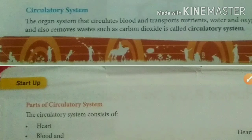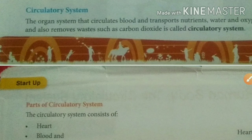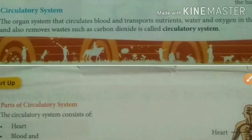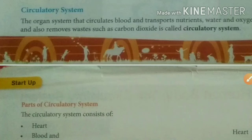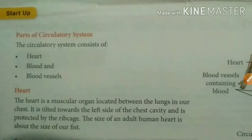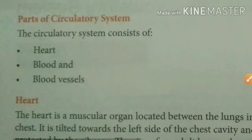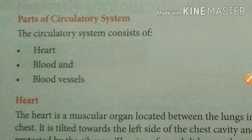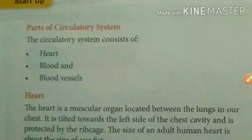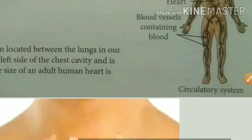The circulatory system transfers oxygen to the cells of our body, gives oxygen, takes back carbon dioxide, and removes it through the lungs. There are three parts of the circulatory system: heart, blood, and blood vessels. We will study each part one by one.